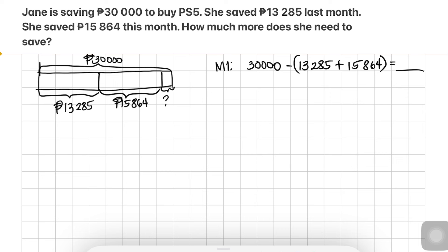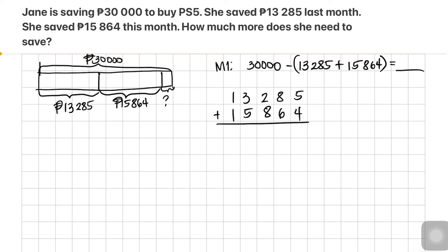To do this, we add first: 13,285 plus 15,864, starting from the ones place. 5 ones plus 4 ones is 9 ones. 8 tens plus 6 tens is 14 tens, so write 4 and carry the 1. 2 hundreds plus 8 hundreds plus 1 hundred gives 11 hundreds.